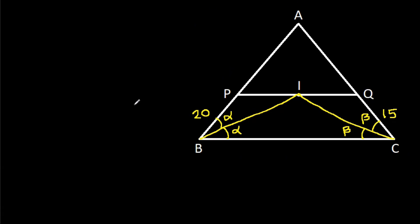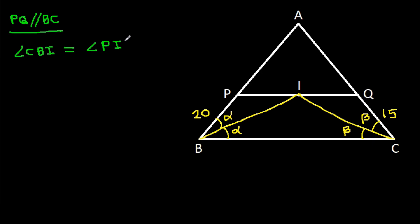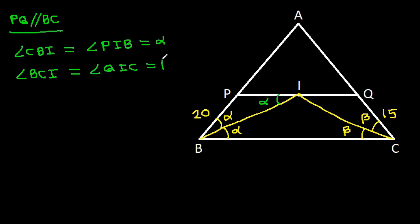And now we have PQ parallel to BC. So angle CBI will be equal to angle PIB — that will be alpha (alternate interior angles). And angle BCI will be equal to angle QIC — that will be beta.